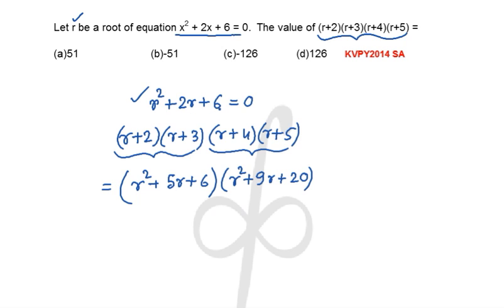Now we know r² + 2r + 6 = 0, so from here we can easily write down that r² can be safely written as -2r - 6. So let us substitute r² to be -2r - 6, similarly r² in the second group as -2r - 6.